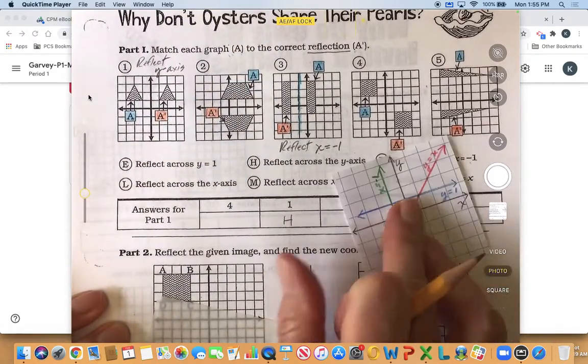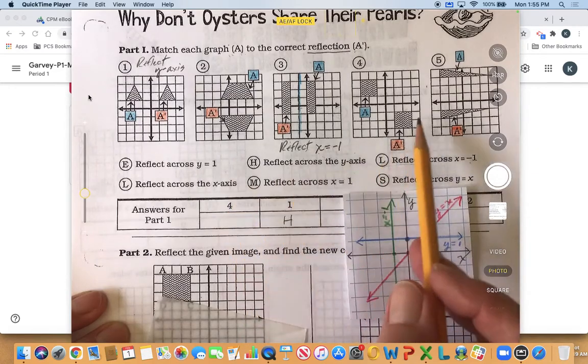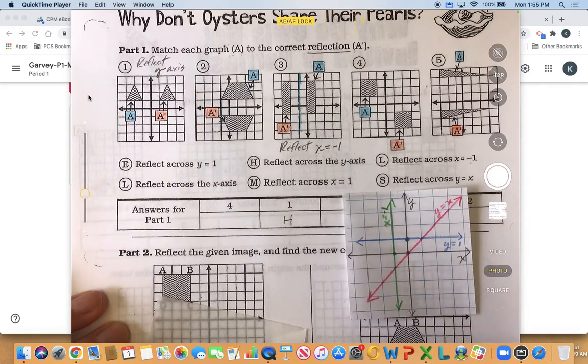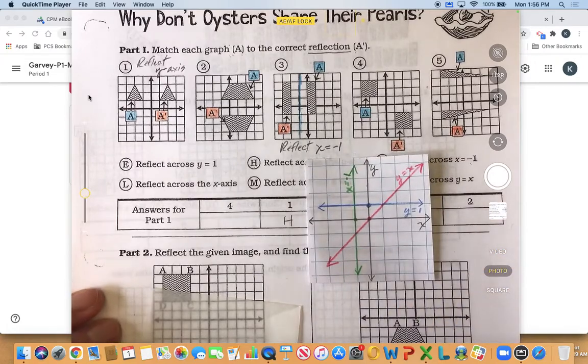Okay so for the rest of these you need to figure out what each one of them has been reflected across. All right and these are kind of the possibilities and they've been drawn for you.